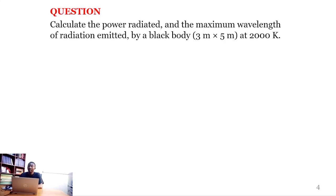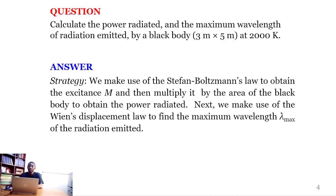Consider a blackbody which has a dimension of 3 meters by 5 meters at 2000 Kelvin. So our strategy is to first use the Stefan-Boltzmann's law to obtain the excitance. The excitance is the power radiated divided by the area of the emitting region. And then multiply the excitance by the area of the blackbody to obtain the power radiated.